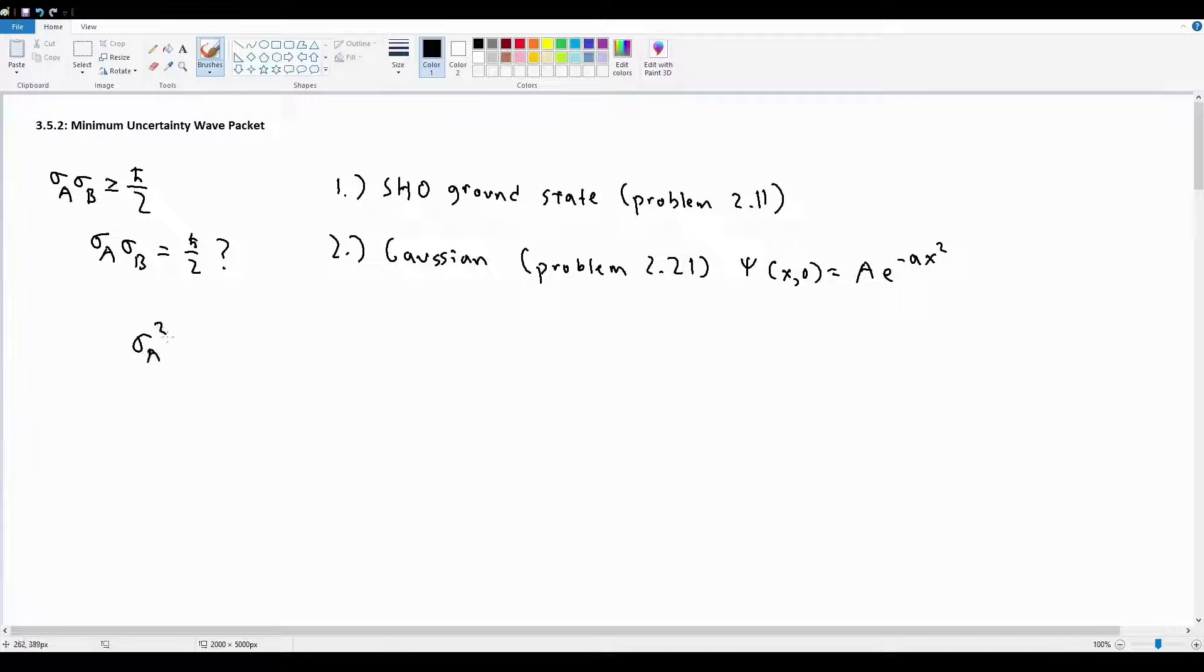So go back to 3.5.1 if you don't remember how this was done. And according to the Schwartz inequality, this is going to be in turn greater than or equal to the inner product of f with g magnitude squared. So our goal is to find out the conditions for which this inequality becomes equality. In what situation will this product become the smallest?